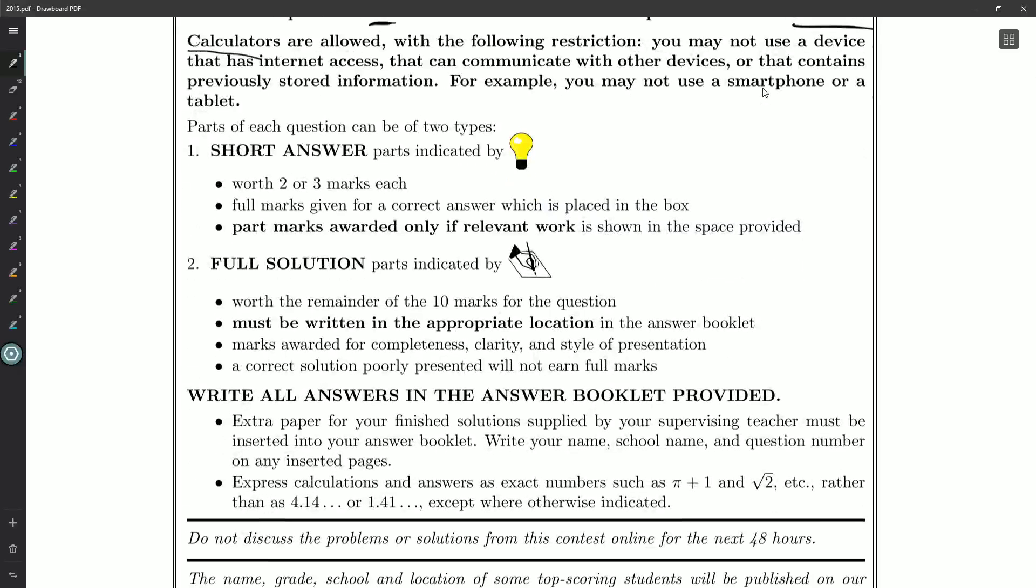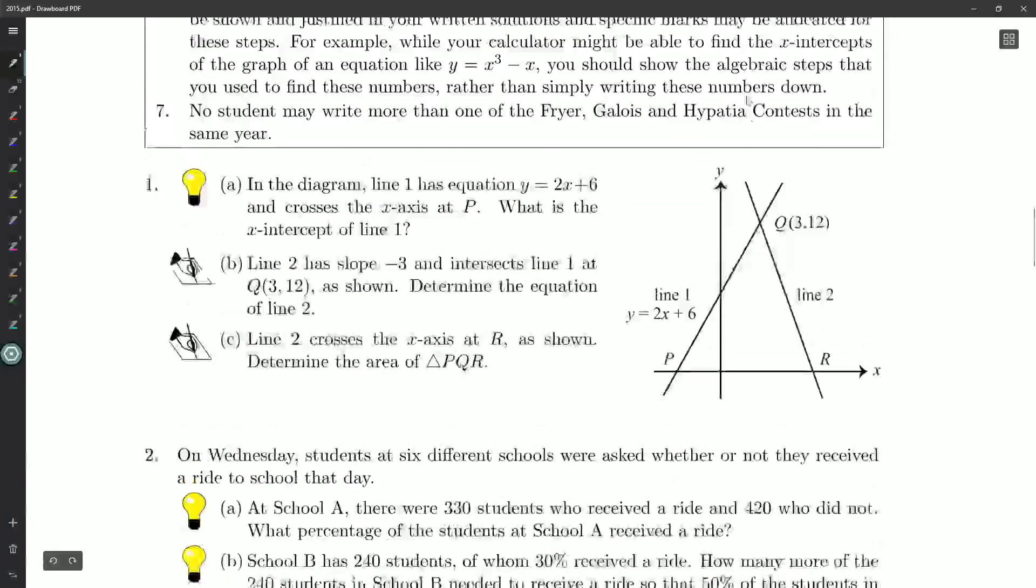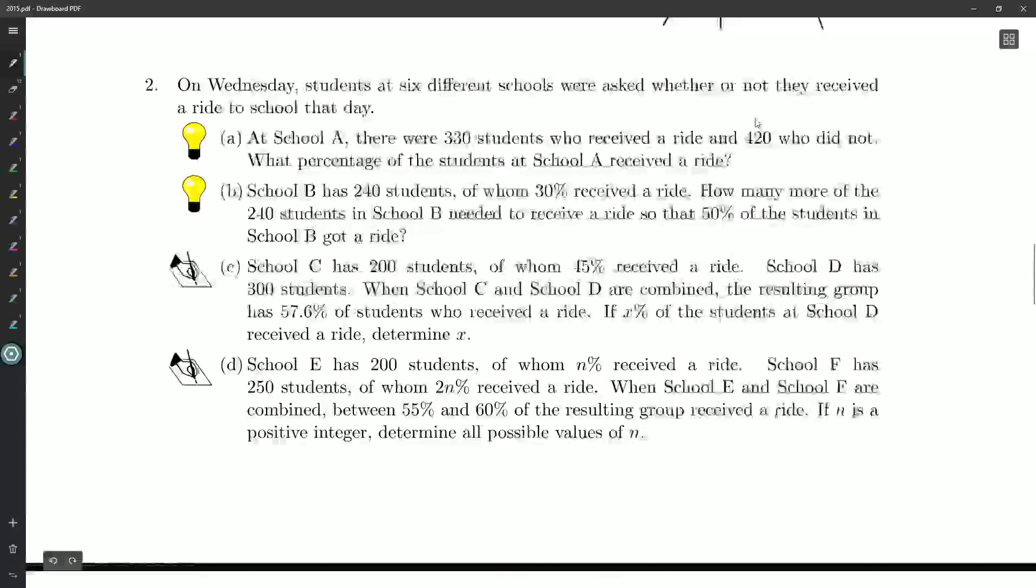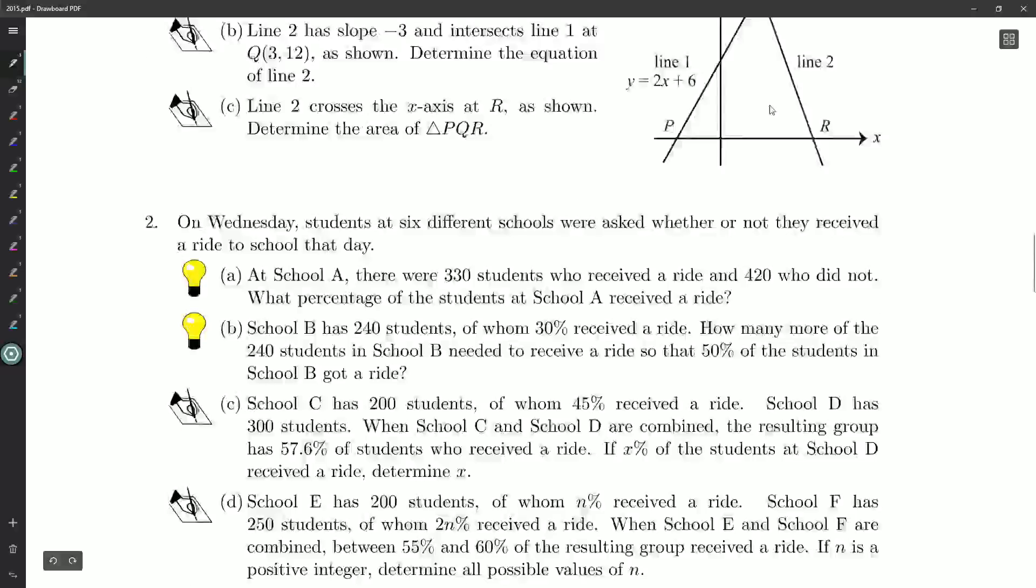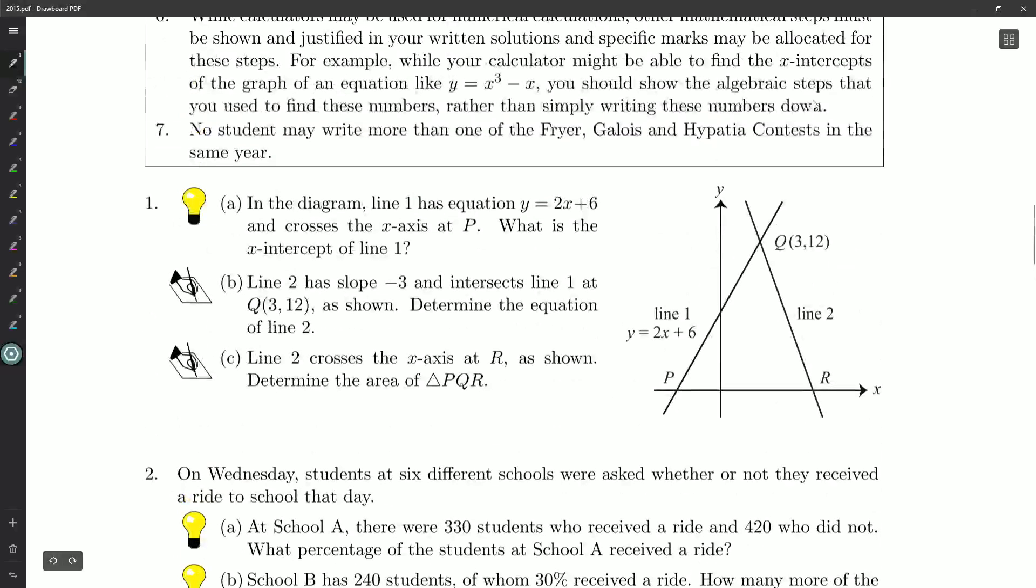Like all of Waterloo's written contests, there are short answer questions indicated by the light bulb, and then there are show all your work questions indicated by the pen to paper. In this video, we're just going to go through question number one and then next time question two and so on until we're done the contest.